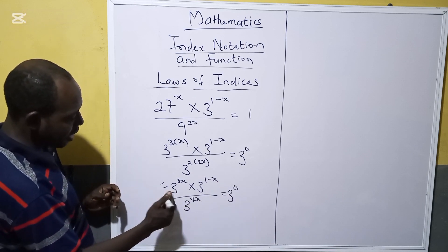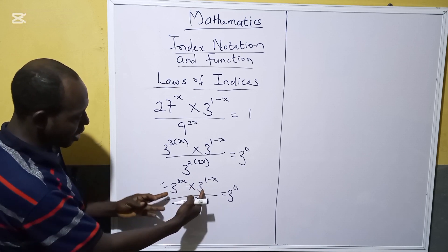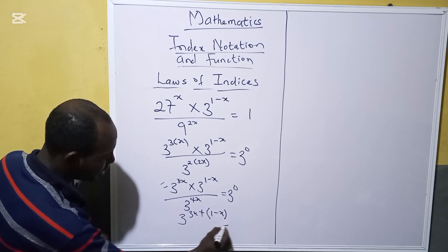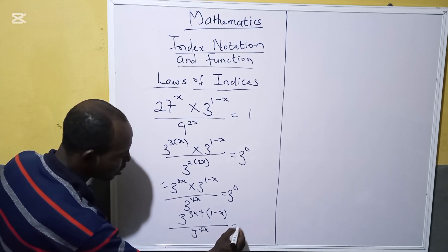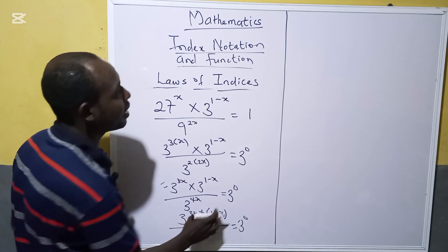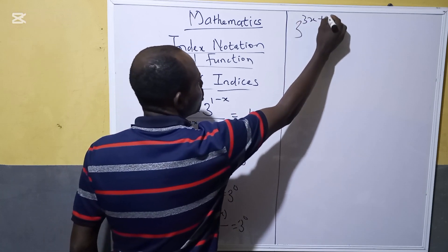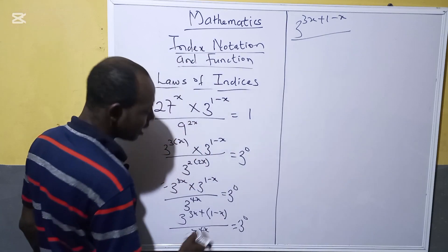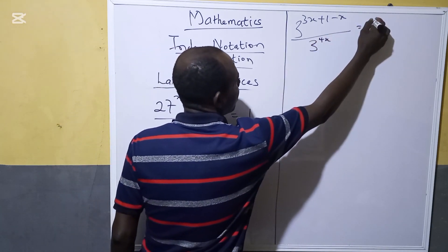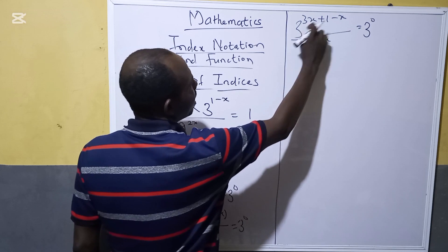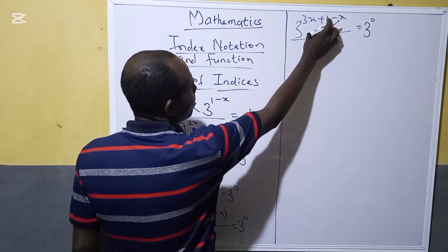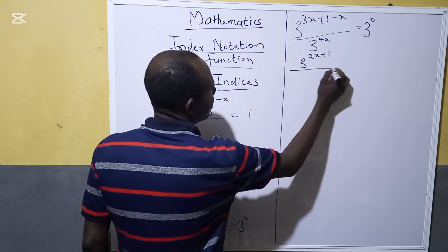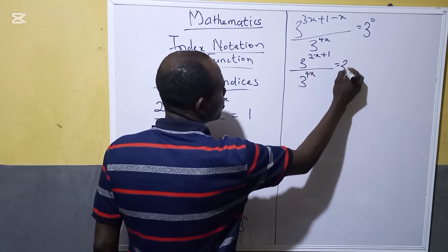The multiplication law states that when the two bases are the same, we can bring the powers together. So it becomes 3 raised to the power of 3x plus (1 minus x), divided by 3 raised to the power 4x, equals 3 raised to the power 0. Then we open the brackets: 3 raised to the power 3x plus 1 minus x. Then doing simple subtraction: 3x minus x gives 2x, and the plus 1 remains. So it becomes 3 raised to the power 2x plus 1, divided by 3 raised to the power 4x, equals 3 raised to the power 0.